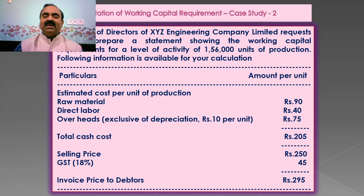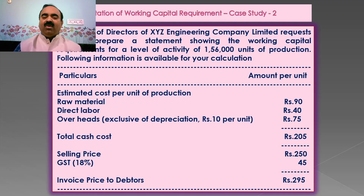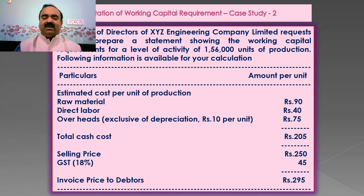Let us now read out the given case study. The Board of Directors of XYZ Engineering Company Ltd. requests you to prepare a statement showing the working capital requirements for a level of activity of 156,000 units of production. Following information is available for your calculation. A table with two columns consisting of particulars and amount per unit is given.